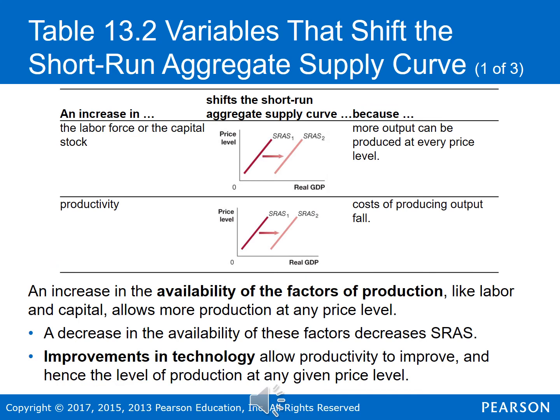Other variables also shift the short-run aggregate supply curve. An increase in the labor force or in the capital stock allows more production at any given price level, so the short-run aggregate supply curve shifts to the right. On the other hand, in a country like Japan where the population is aging, the labor force is decreasing, and holding all other variables constant, this decrease in the labor force causes the short-run aggregate supply curve to shift to the left. Similarly, improvements in technology allow productivity to improve, increasing the level of production at any given price level, and this also shifts the short-run aggregate supply curve to the right.